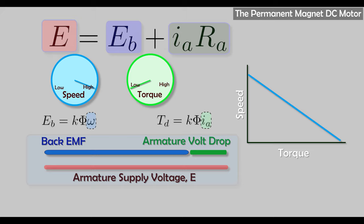To review the series motor: the field and armature currents are in series so they must be the same at all times. At startup, speed is low, so back EMF is low — back EMF usually limits the current, so current starts high. Since torque is proportionate to the square of current, torque starts off big. But as the motor speeds up, current must get smaller and torque drops away very quickly, leading to poor regulation.